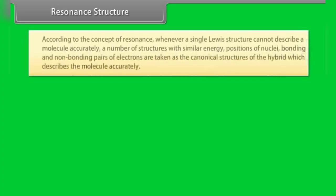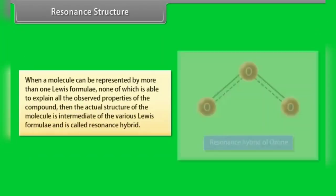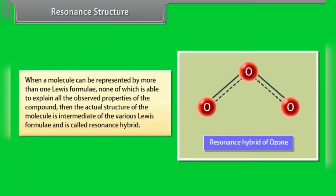According to the concept of resonance, whenever a single Lewis structure cannot describe a molecule accurately, a number of structures with similar energy, positions of nuclei, bonding and non-bonding pairs of electrons are taken as the canonical structures of the hybrid which describes the molecule accurately. When a molecule can be represented by more than one Lewis formula, none of which is able to explain all observed properties, the actual structure is intermediate of the various Lewis formulae and is called the resonance hybrid.